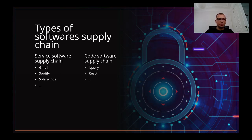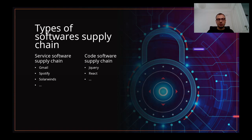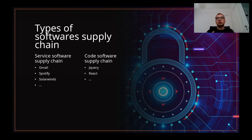Let's see some examples of the software supply chain. I like to mention two different types. The first one is the service software supply chain. This is basically when you download a software and you receive an executable directly, you just execute it and it works out of the box. That's basically the case for the Spotify app, the Gmail app, or basically any app you might use on a day-to-day basis. There is also another possibility — if you're a big company, you might want to rely on a software to manage your employees and payroll, and that's for example what SolarWinds is doing.